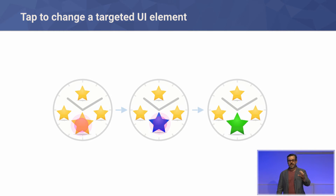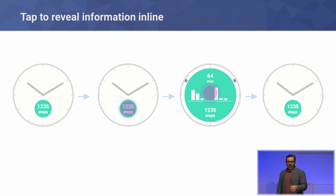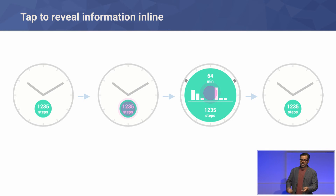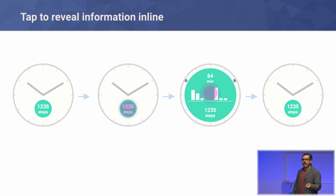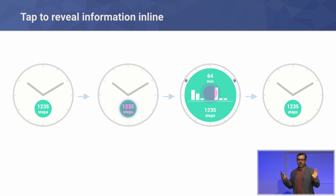If you want to change a specific area of the UI, design the tap targets around that area. A basic example: you have a little star — tap on it to cause a specific change to that part of the UI. Following this principle, you can tap on a specific area and it expands to reveal information inline, then tap back to return. For example, a complication showing a step counter: tap on it and it expands inline to reveal more information, so you don't have to leave your favorite watch face, open a micro app, or look at a notification.